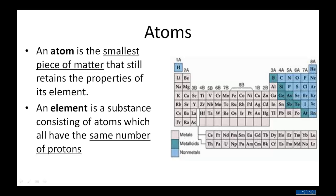An atom, then, is the smallest piece of matter that still retains the properties of its element. An element is a substance consisting of atoms which all have the same number of protons. Remember that? Number of protons define what element it is.